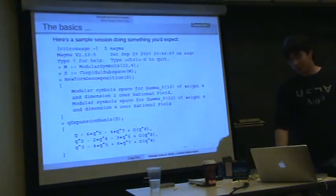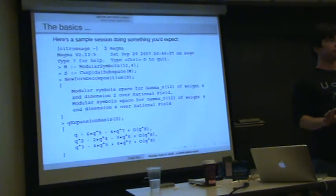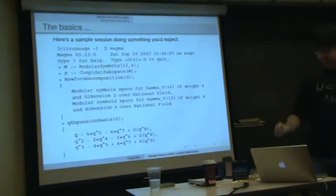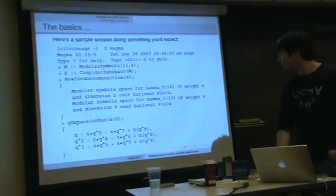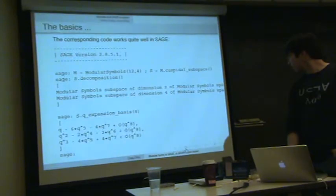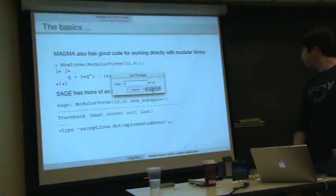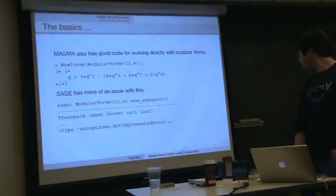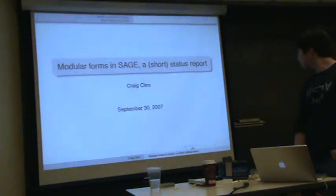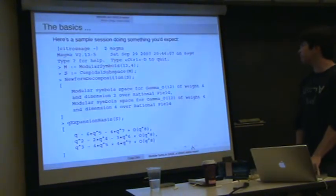So this is MAGMA. You can compute spaces of modular symbols, ask for new form decomposition, take some bases of various spaces. Can you switch back to... Sorry, you're not used to... I actually prefer it the other way, but I guess I'm weird. Creature of the night. Yeah. So you can do the things you would expect. Who's never tried to use the modular forms code for anything?